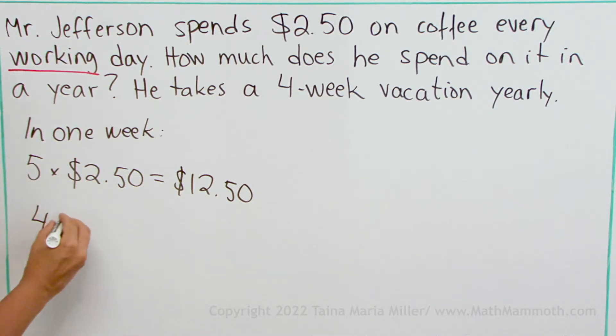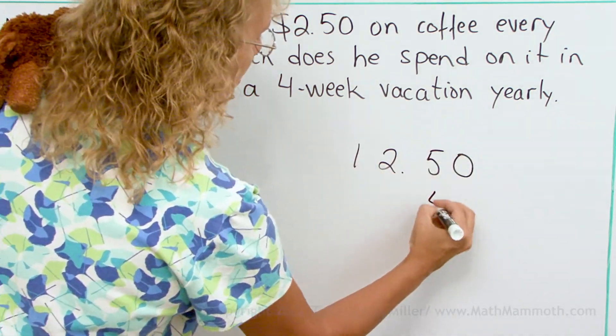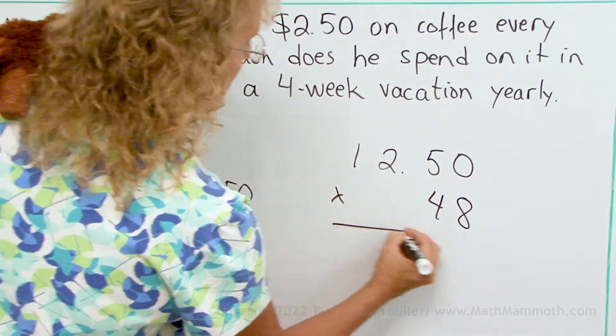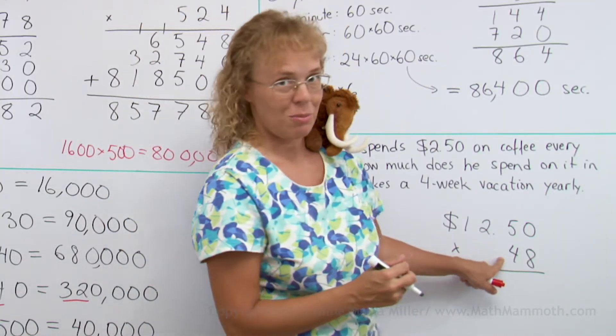So we need to calculate 48 times $12.50. Remember, you want to put a shorter number on the bottom, okay?